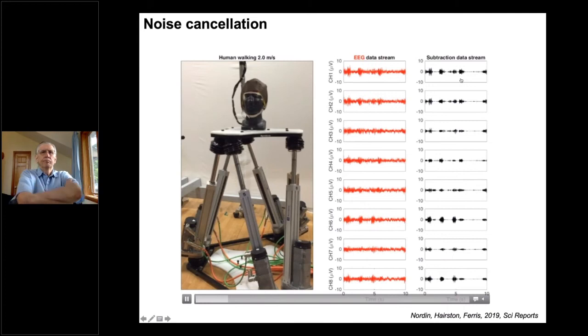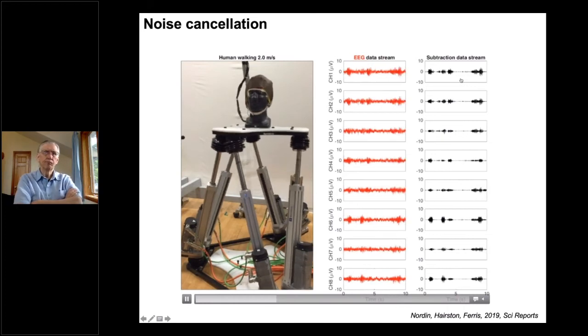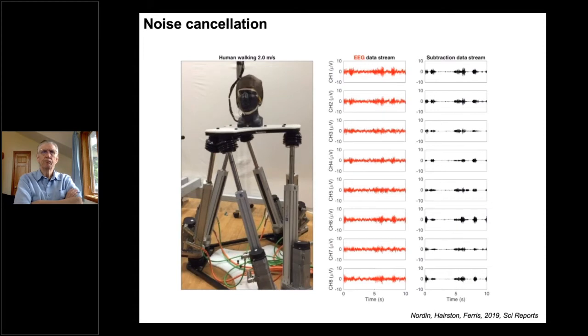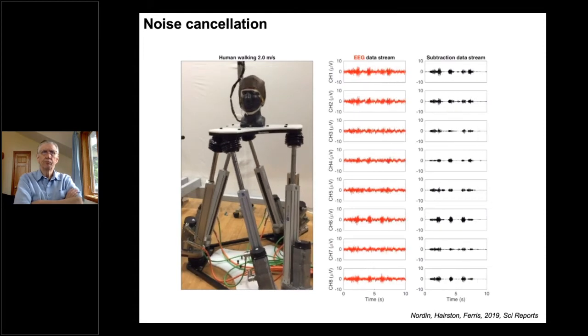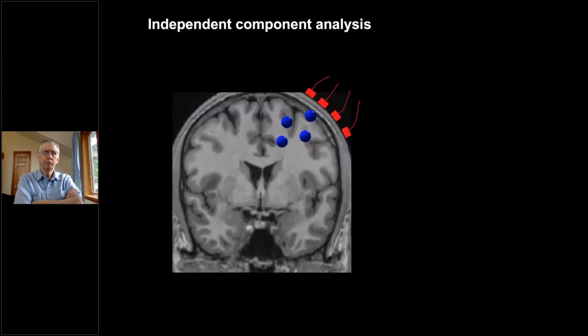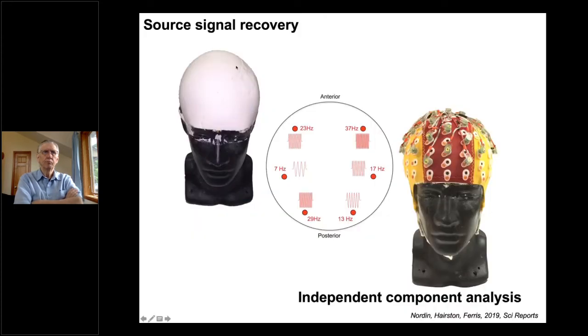So that's all great. The nice thing with that approach is it's fairly computationally cheap, so I can do that in a sliding window. But for most of us who work in this area, we actually want to get to the ground truth sources. What we're measuring at the scalp is a mixture of those sources. So to get to those independent sources, as many of you know, we're using independent component analysis.